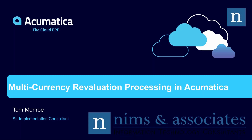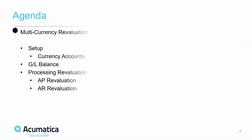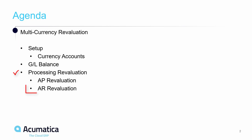Thank you for joining us again today. We're going to continue our series on multi-currency processing in Acumatica, specifically talking about revaluation of accounts receivable and accounts payable balances. Our agenda includes a bit of setup we'll examine first in multi-currency preferences, then specific setup for the currency accounts, then we'll look at our general ledger balances and process revaluation in accounts payable and accounts receivable.